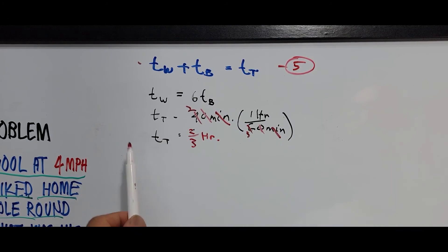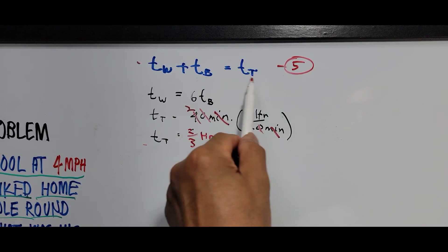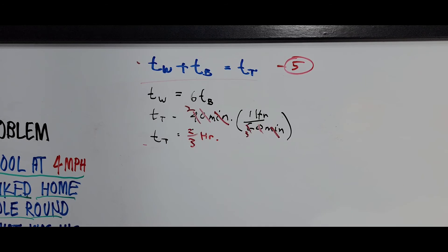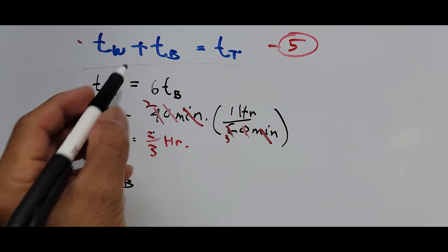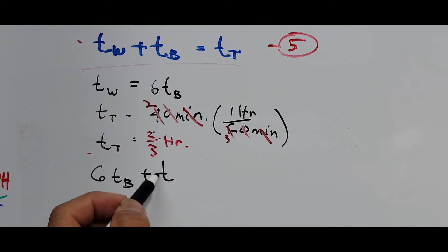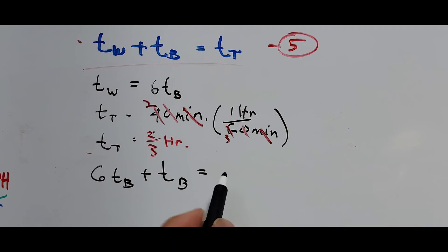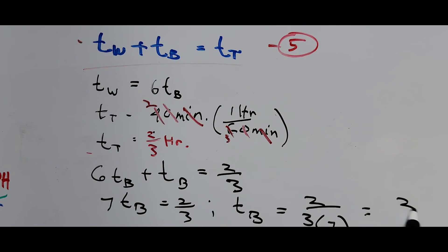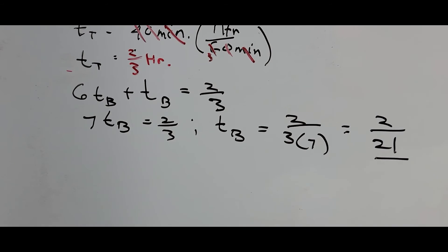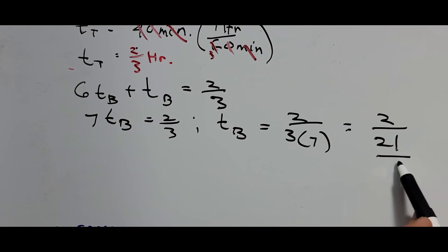We now substitute into equation 5. Since T_W equals 6 times T_B, we have: 6T_B plus T_B equals 2/3, so 7T_B equals 2/3. Solving for T_B: T_B equals 2/3 divided by 7, which equals 2 over 21 hours. That is the time biking.